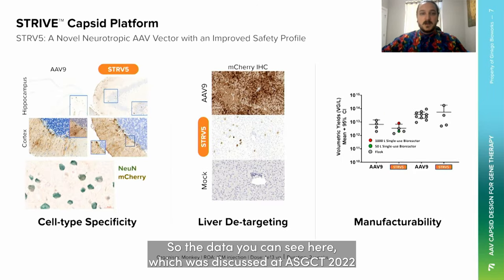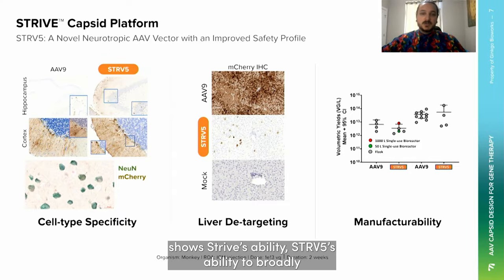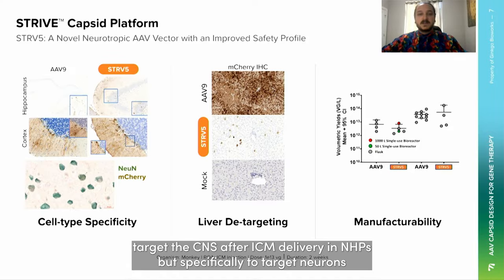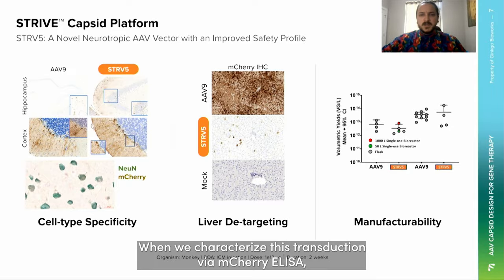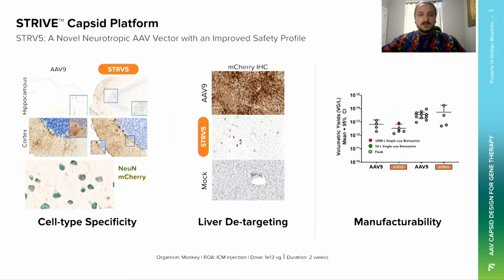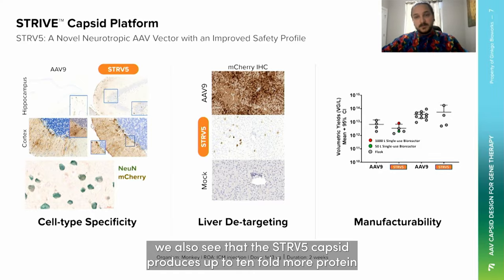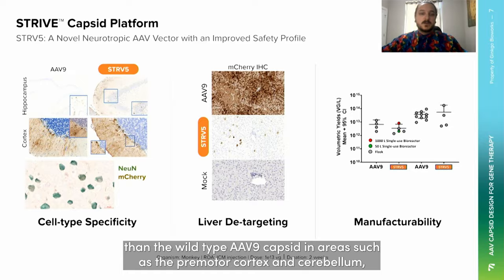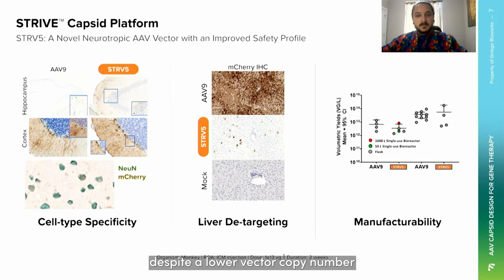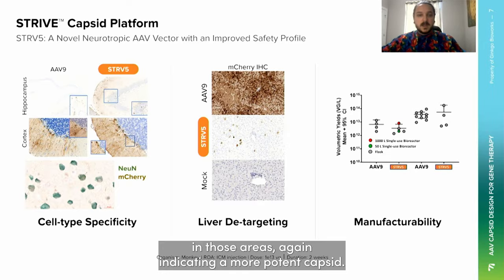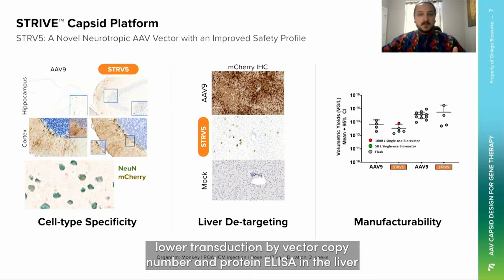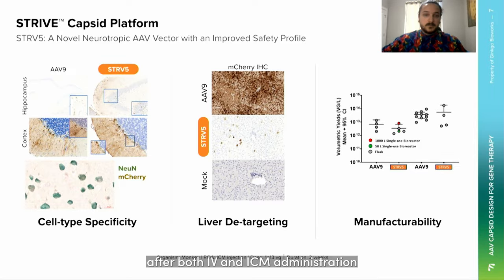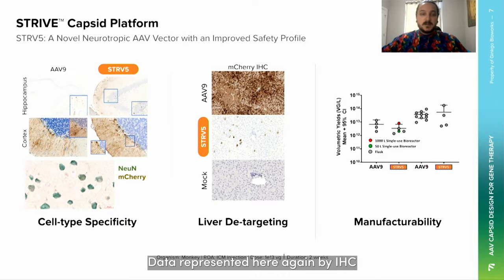The data discussed at ASGCT 2022 shows Strive 5's ability to broadly target the CNS after ICM delivery in NHPs, but specifically to target neurons over astrocytes, as shown by NeuN and mCherry co-staining. When we characterize this transduction via mCherry ELISA, we also see that the Strive 5 capsid produces up to tenfold more protein than the wild-type AAV9 capsid in areas such as the premotor cortex and cerebellum, despite a lower vector copy number in those areas, indicating a more potent capsid. In addition, Strive 5 has also exhibited up to a thousandfold lower transduction by vector copy number and protein ELISA in the liver after both IV and ICM administration, as represented here by IHC.